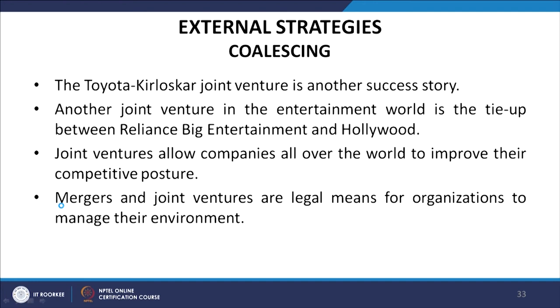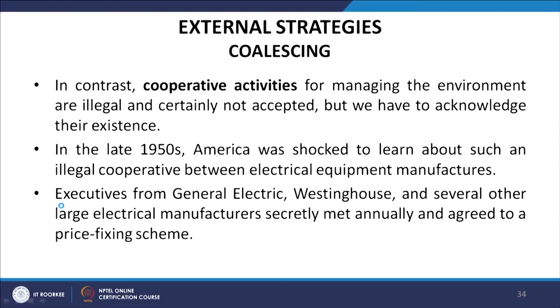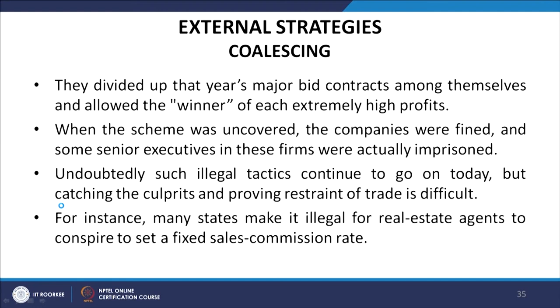Mergers and joint ventures are legal means for organizations to manage their environment. In contrast, some cooperative activities are illegal. In the late 1950s, America was shocked to learn of an illegal cooperative among electrical equipment manufacturers. Executives from General Electric, Westinghouse and several other large electrical manufacturers secretly met annually and agreed to a price-fixing scheme, dividing up that year's major bid contracts among themselves for extremely high profits. When uncovered, the companies were fined and some senior executives were actually imprisoned.